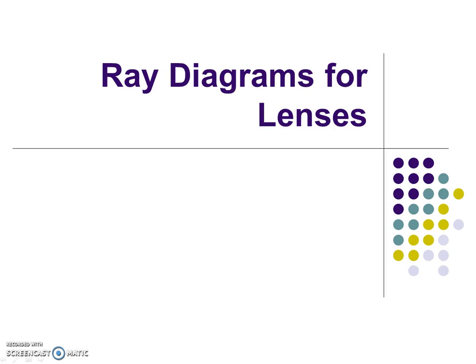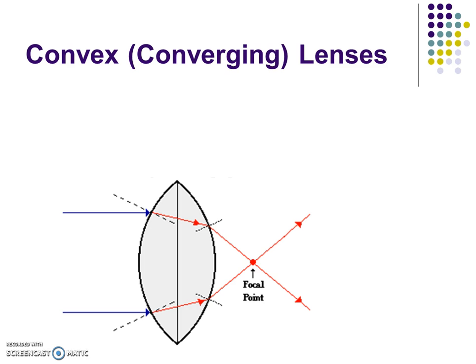We're going to do ray diagrams for lenses, just like what we did for mirrors. We'll do three ray diagrams — using different colors is a good idea — so pause the video so you can draw along. There are going to be three diagrams, so on your sheet of paper use the top, middle, and bottom. Let's look at the type of lens that's thicker in the middle and thinner on the sides — that's called a converging lens, also called a convex lens. We'll use the term converging so we don't confuse it with a convex mirror.